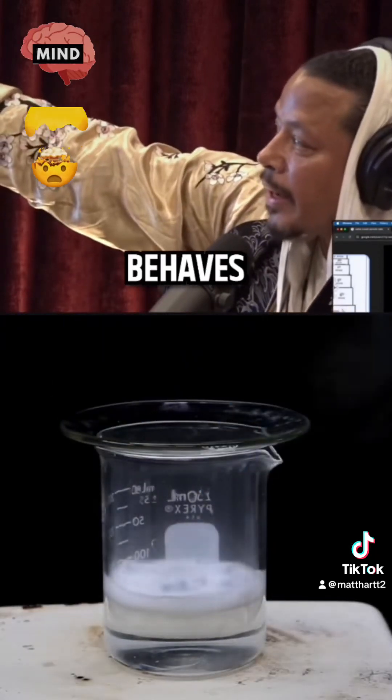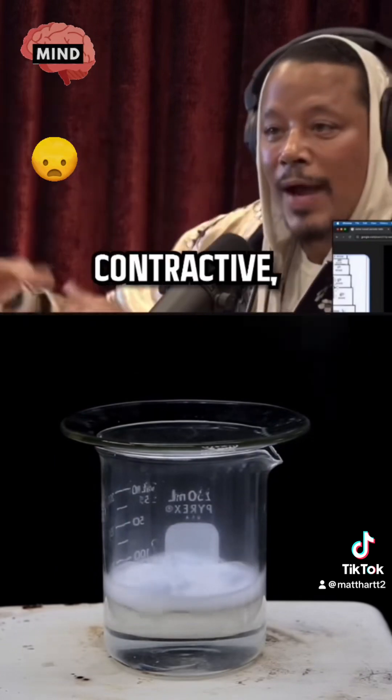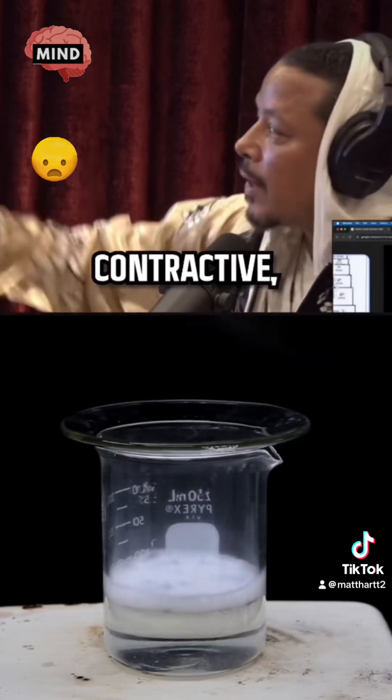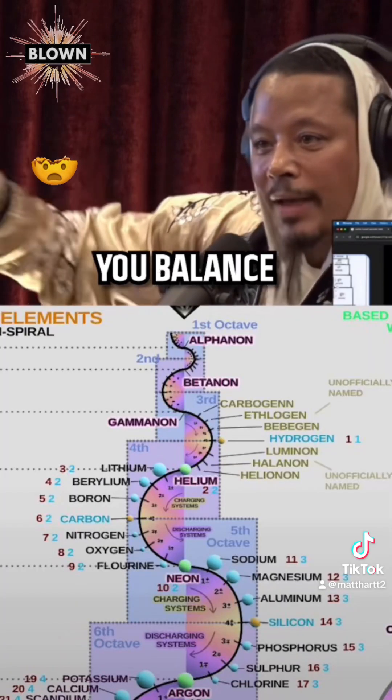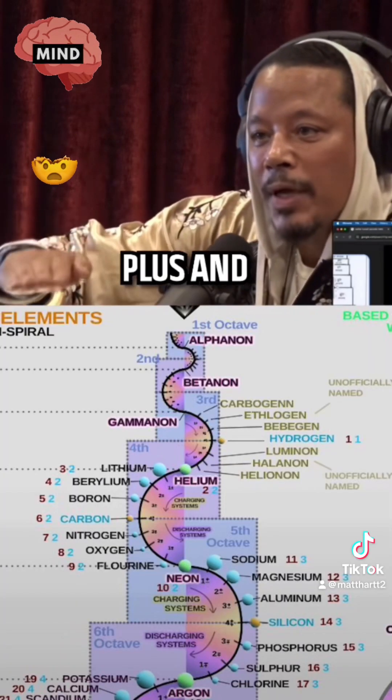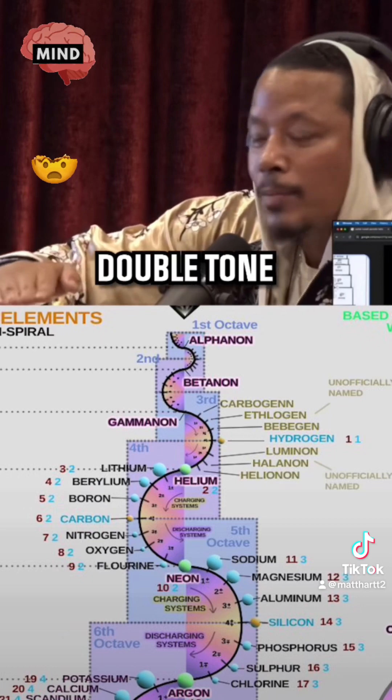It has a negative side and a positive side. The part where lithium behaves, lithium is contractive. Beryllium is contractive. Boron is contractive. But the moment you get to carbon, you balance it out. Gets to a perfect balance of plus and minus four. So it's a double tone.